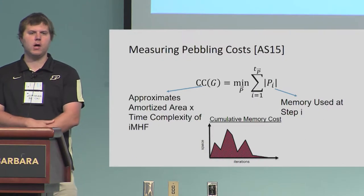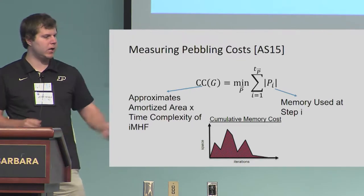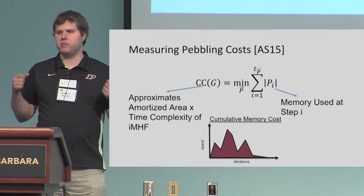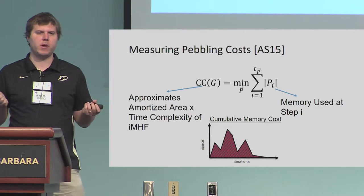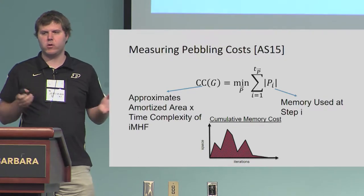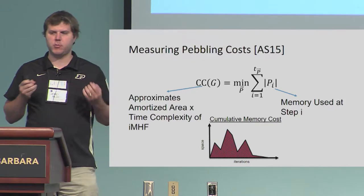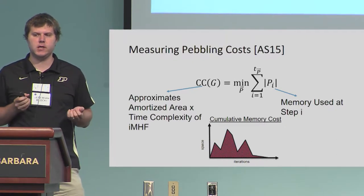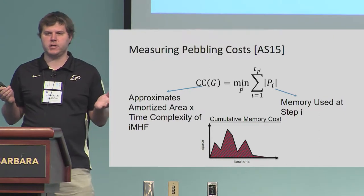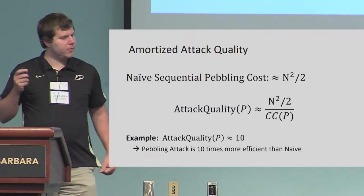Alwyn and Sermonenko proposed a different metric called cumulative memory complexity, or cumulative pebbling complexity for graphs. Here, we sum over all pebbling rounds the total number of pebbles on the graph at that point in time — so the area under the curve rather than the area around the curve. The nice thing is that it actually approximates amortized area-time complexity quite nicely. The cumulative memory complexity of computing two instances of this function is two times the complexity of computing one instance.